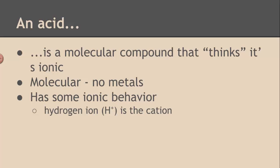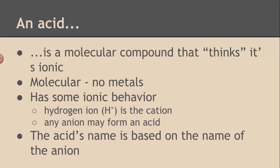Because it's behaving like ionic compounds, it sort of has a cation. And the cation for all acids is always H+. Remember that cations are written first, so in an acid's formula, the first letter you're going to see is an H for hydrogen. That's the H+. That's what makes an acid an acid, is the presence of this H+ cation. Any other anion can be used to make an acid. And the name of the acid is based on the name of the anion in it. Since they all contain the same cation, it's the anions that are different, and so that's what we're going to get the name from.